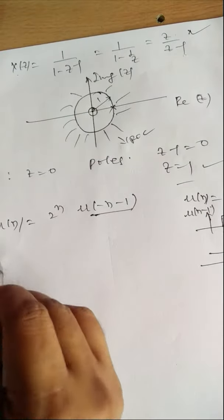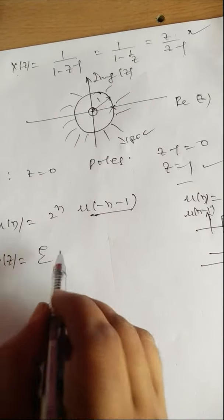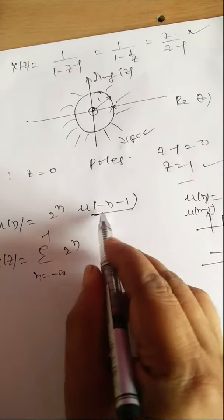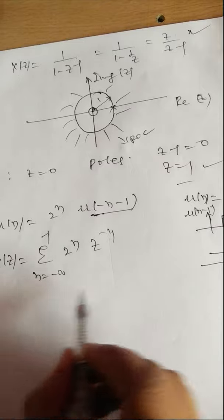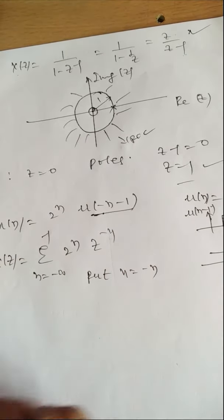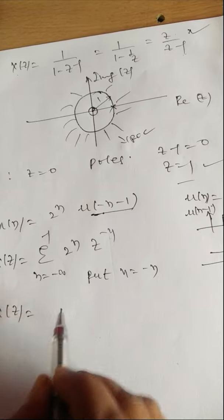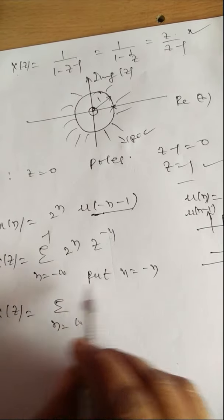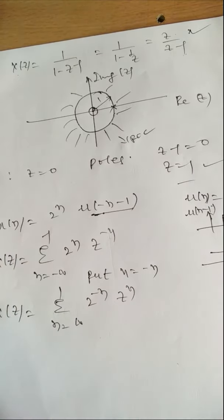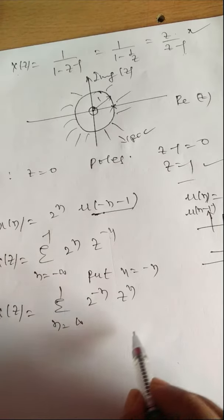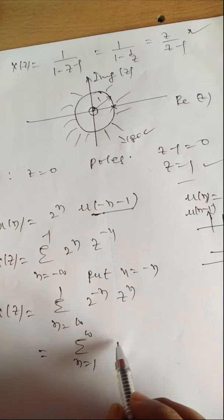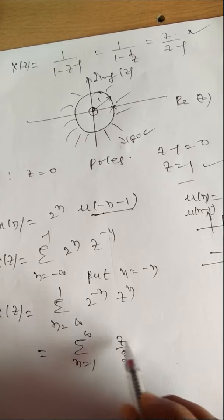Its Z-transform: since the signal exists only from -1 to -∞, the limits are -∞ to -1. X(z) = summation from -∞ to -1 of 2^n · Z^(-n). We do not know the series from -∞ to -1, so let us substitute n = -n. When n is replaced by -n, the limit n = -∞ becomes n = +∞, and the limit n = -1 becomes n = 1. The integrand becomes 2^(-n) · Z^n = (Z/2)^n.